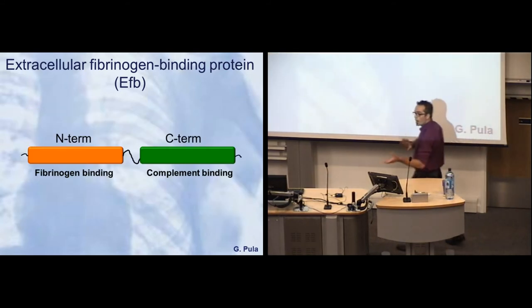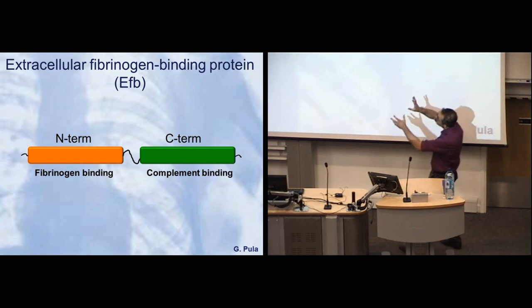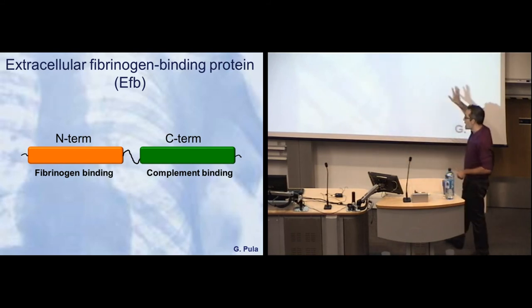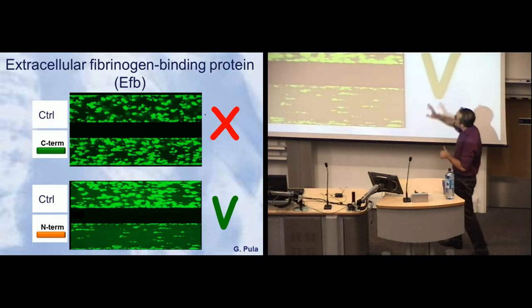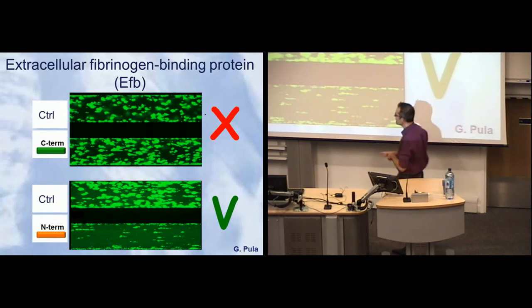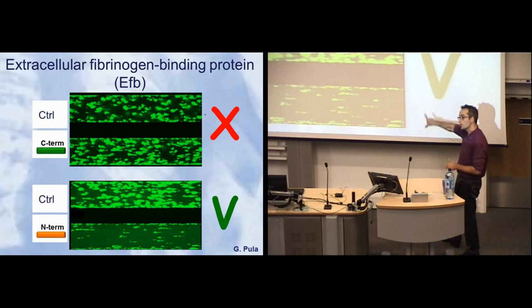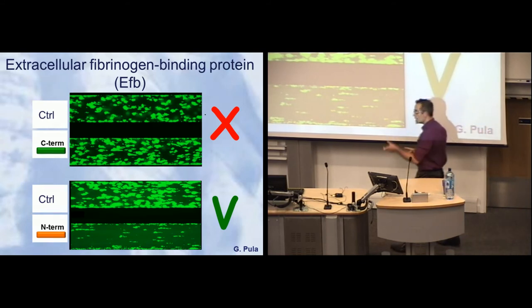Next, we wanted to understand which part of the protein is responsible for this anti-platelet effect. So we chopped the protein in half. The N-terminus is responsible for fibrinogen binding, and the C-terminus for binding other proteins in the plasma. We tested them again with our system. The C-terminus doesn't do anything to clot formation, so let's forget about the C-terminus. The N-terminus is very active, so we know that the part of the protein we are interested in is in the N-terminus.